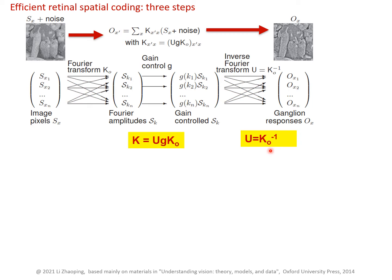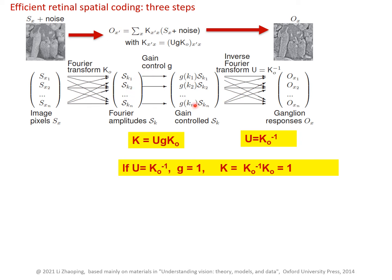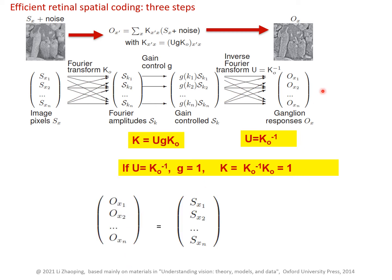If we instead take U as the inverse Fourier transform but make the gain control equal to the identity — each gain equal to one, so no gain control — then K becomes just the Fourier transform followed by the inverse Fourier transform, which cancel out to nothing. The output vector simply equals the input vector, meaning each output node has a very small receptive field and depends on only one corresponding input pixel.